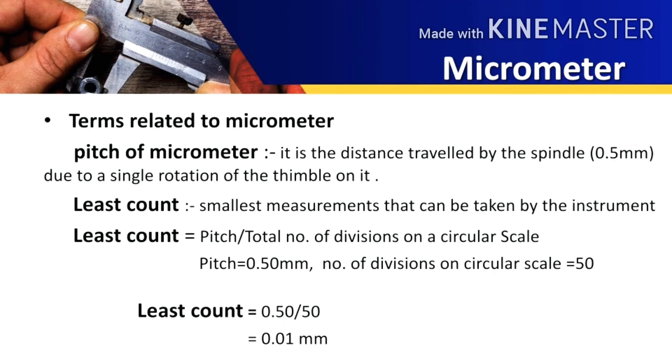Now the least count. The least count of the micrometer is the smallest measurement that can be taken by the instrument and it has a very simple formula. Let us see how to calculate the least count of the micrometer. The least count is equal to pitch of the micrometer divided by total number of divisions on the circular scale.